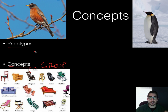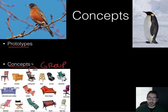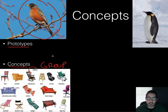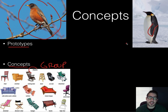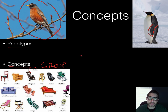Breaking that down a little further is a thing called prototype. A prototype is our best example of whatever we're talking about. For birds, if I say what do you think of when you think of a bird, probably what comes to your mind looks more like a Robin. A penguin is probably not the first thing that came to your mind. You know that a penguin fits the title of a bird — it's got two feet, it's got wings — but it's not the best example of a bird. A Robin is birdier than a penguin, if you will. So a prototype is your best example.